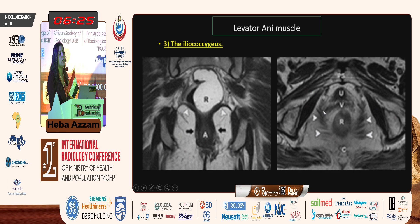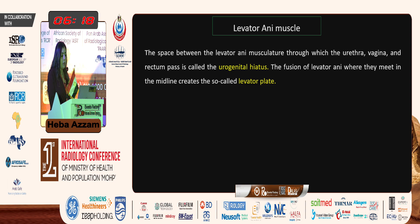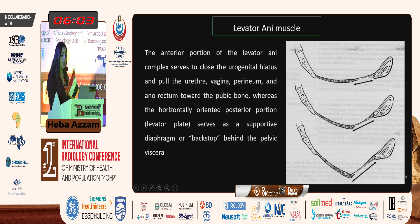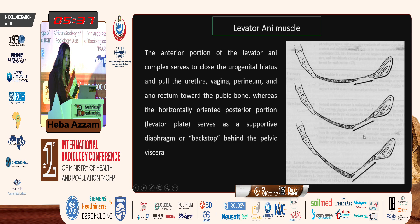The space between the levator ani musculature through which the urethra, vagina, and rectum pass is called the urogenital hiatus. The fusion of the levator ani where they meet in the midline creates the levator plate. The anterior portion of the levator ani complex serves to close the urogenital hiatus and pull the urethra, vagina, perineum, and anorectum toward the pubic bone, while the horizontally-oriented posterior portion — the levator plate — serves as a supportive diaphragm behind the pelvic viscera. With consequent weakening of the muscle, there is widening of the hiatus and sagging of the levator plate.